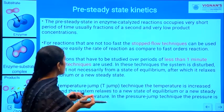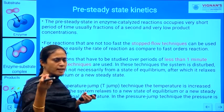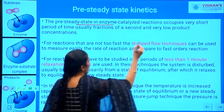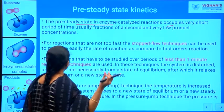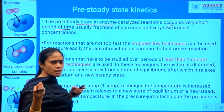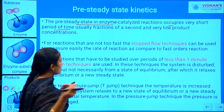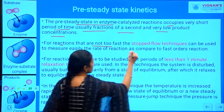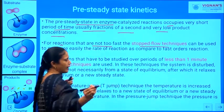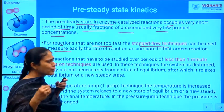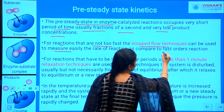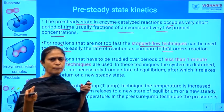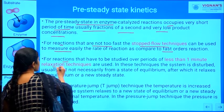Now we will focus on what is the pre-steady state kinetics. The pre-steady state in enzyme-catalyzed reactions occupies a very short period of time — only a few seconds with very low product concentrations. For a reaction that is not too fast, you can stop it using a stopped-flow technique, which can be used to measure the rate of reaction compared to fast ordered reactions. For reactions completed within less than one minute, you can use relaxation techniques.